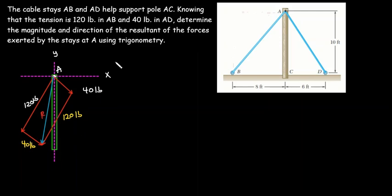Before we find R, we have to find values for some angles. Let's take this to be angle A, this to be angle B, and this to be angle E. To find angle A, we are going to use the tangent of angle A.